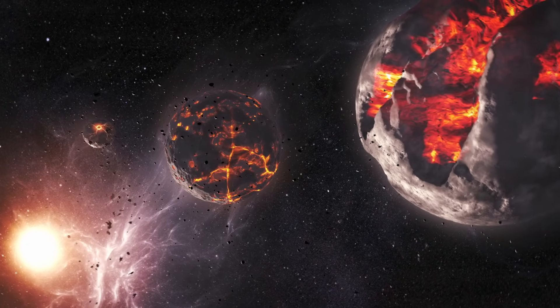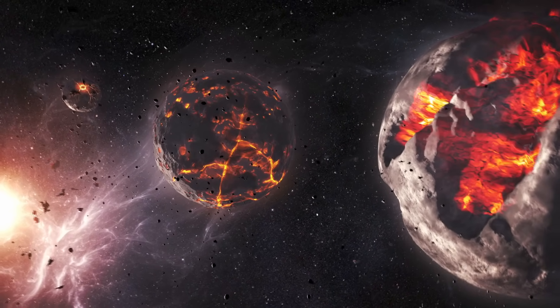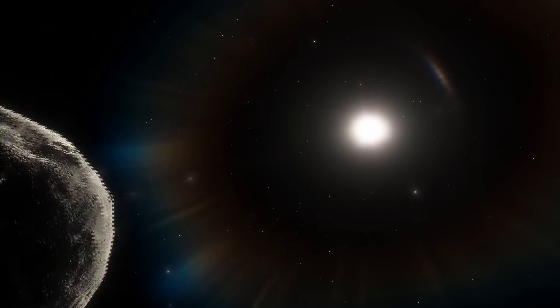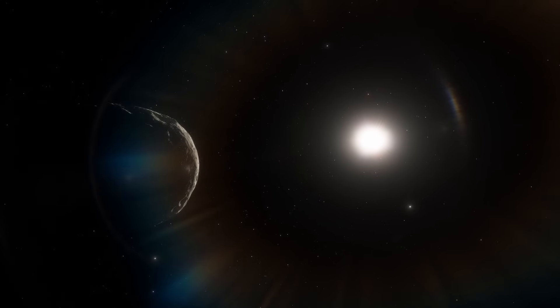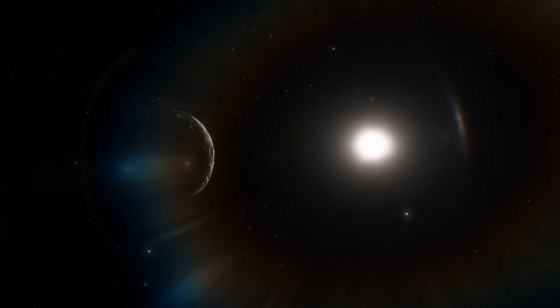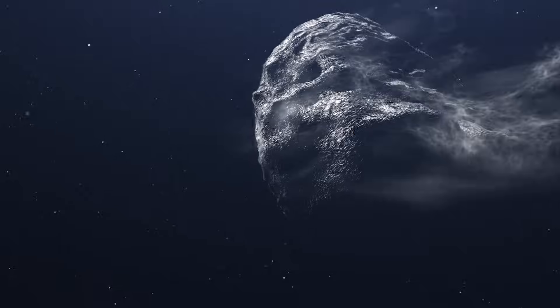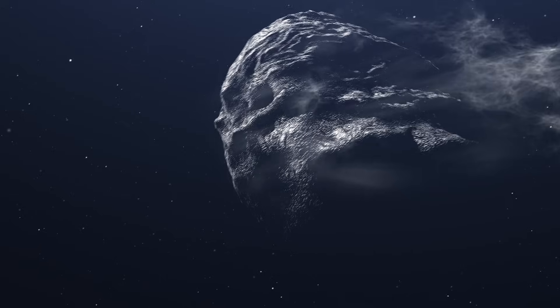Meet 16 Psyche. Radar observations suggest it's not made of rock or ice, but mostly of metal. The leading theory is that Psyche is the exposed iron-nickel core of a world like Vesta, whose rocky mantle and crust were stripped away by a series of catastrophic hit-and-run collisions.